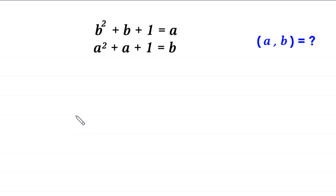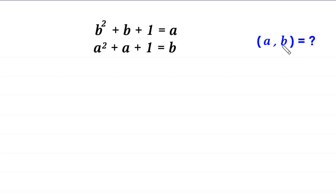Hello everyone, welcome to solving this very nice system of equations: b squared plus b plus 1 is equal to a, and a squared plus a plus 1 is equal to b. Our job is to find all possible values of a and b.